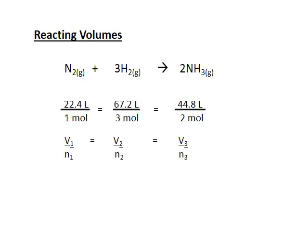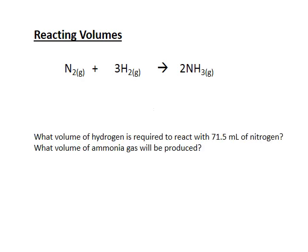So V1 over N1 is equal to V2 over N2 is equal to V3 over N3. So we can solve some simple stoichiometry problems just by using Avogadro. I want to know what volume of hydrogen is required to react with 71 milliliters of nitrogen, and I also want to know what volume of ammonia gas will be produced.